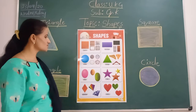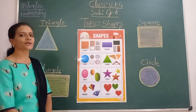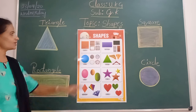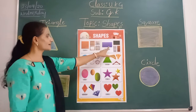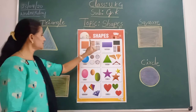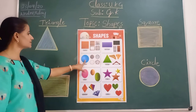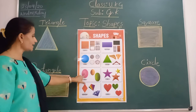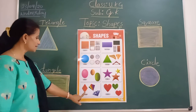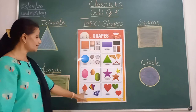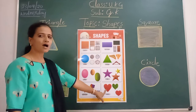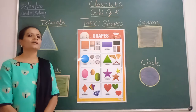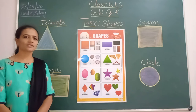So, what we learn today? About shapes. So: square, rectangle, circle, triangle, oval, star, diamond, heart. We will see in the next class. Thank you, children.